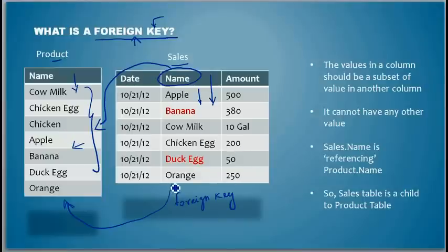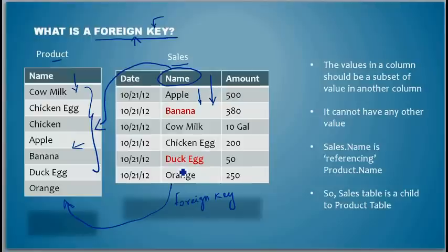With this foreign key structure enabled, if someone comes and types 'dinosaur egg' here, the database system won't allow it. It will say 'foreign key violation.' The values in a column should be a subset of the values in another column — that is maintained by the foreign key. So sales.name is referencing product.name. The values in sales cannot be anything which isn't present in products, but they can be anything which is present there.